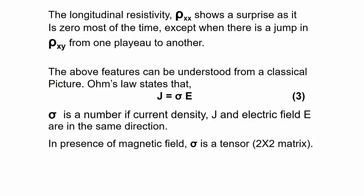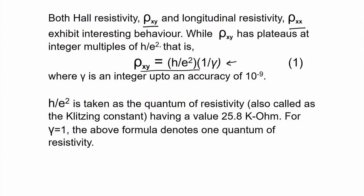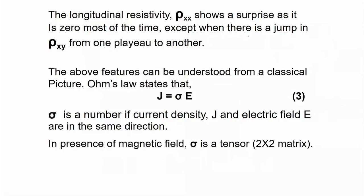The longitudinal resistivity rho_xx shows a surprise: it is zero most of the time — zero here, zero here, and so on — except when there is a jump in rho_xy from one plateau to another. The above features can be understood from a classical picture, so let us see what the classical picture unfolds.